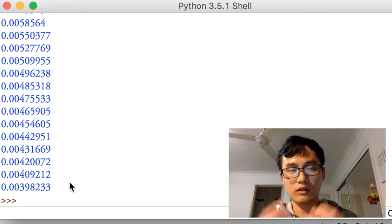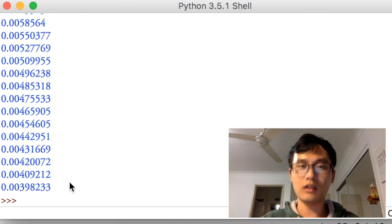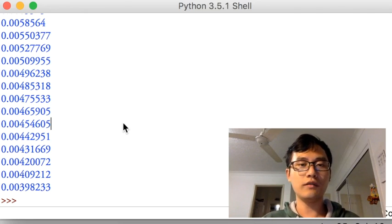So at the end of the step, the loss is just 0.00398. So this is to say that the neural network is learning something.